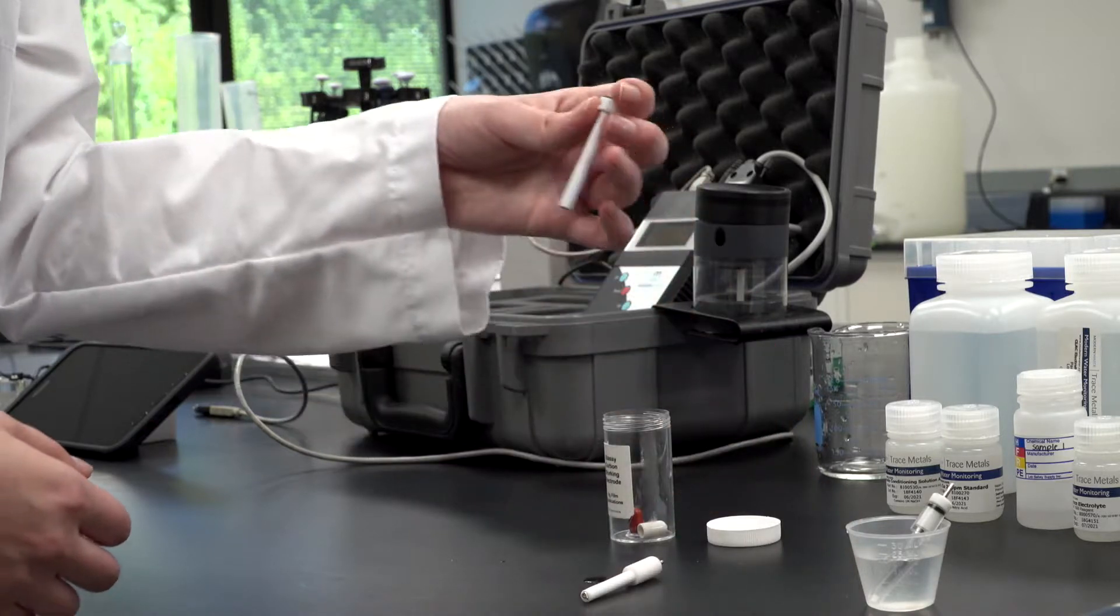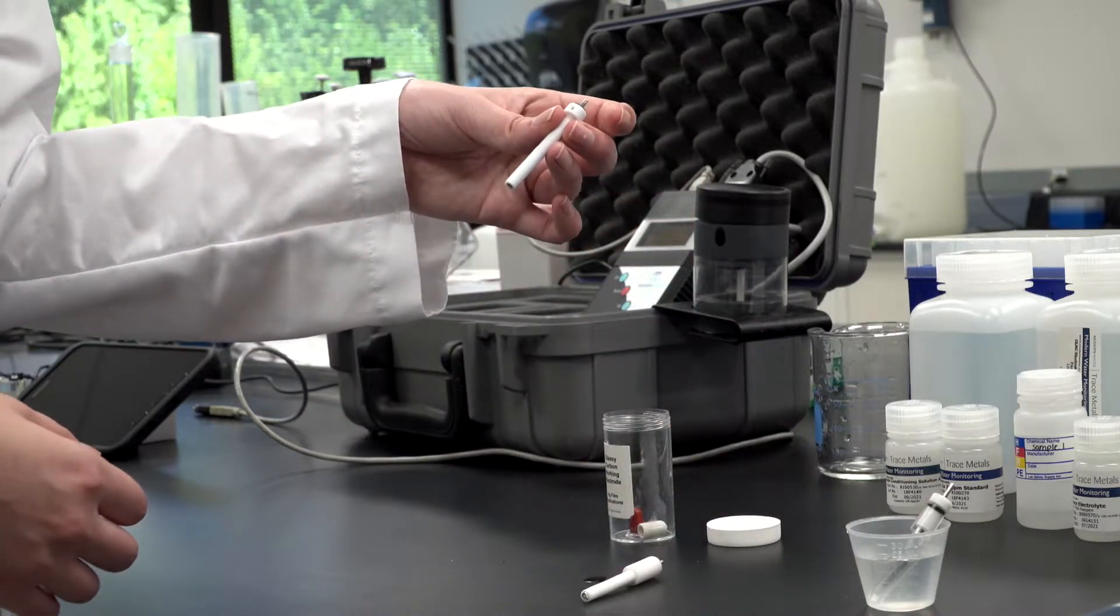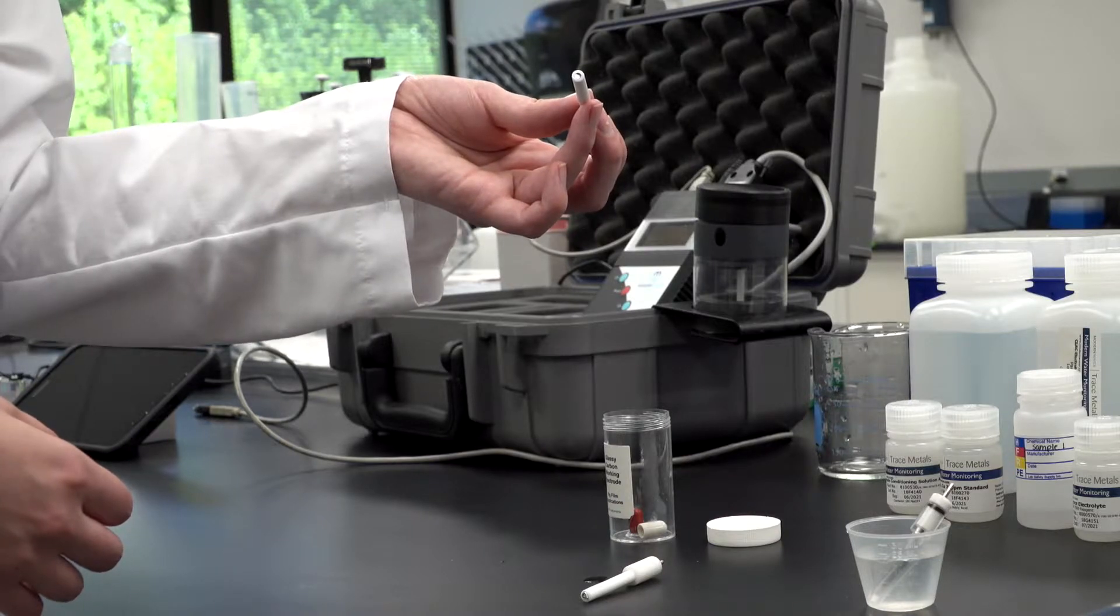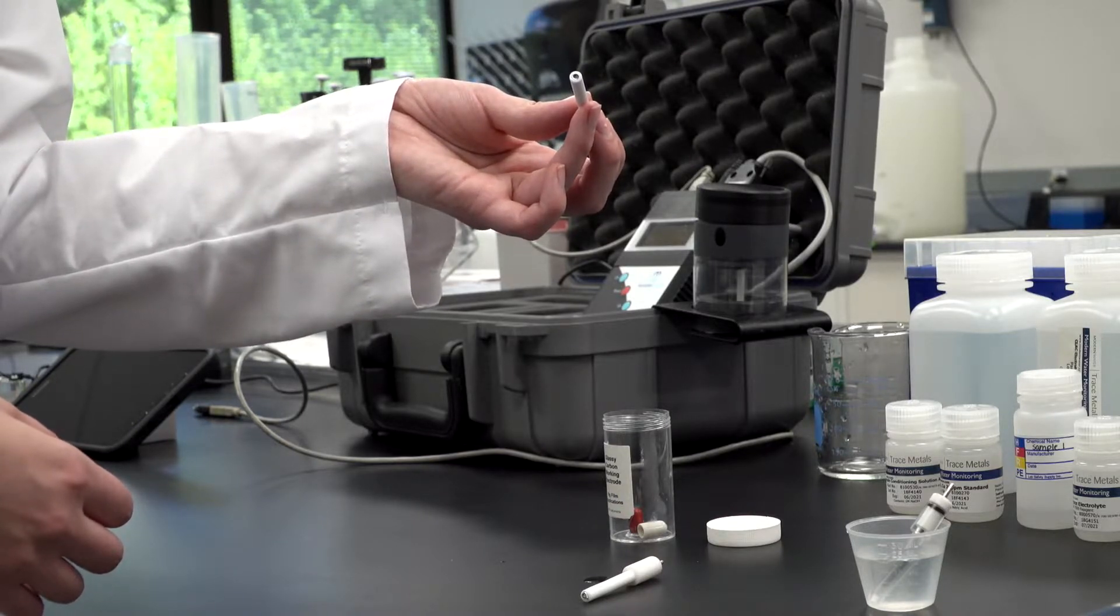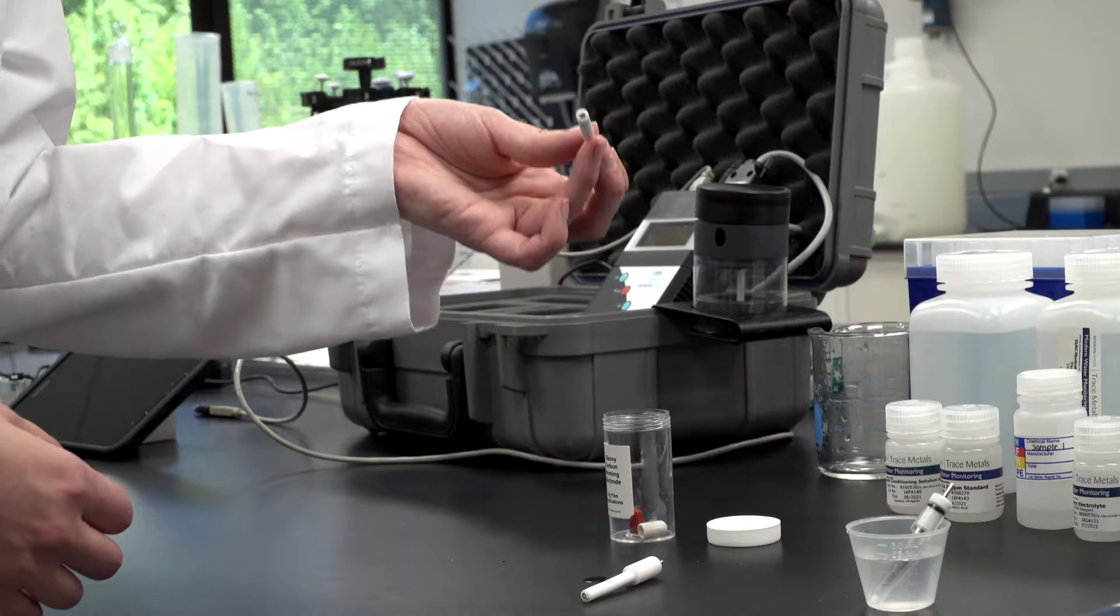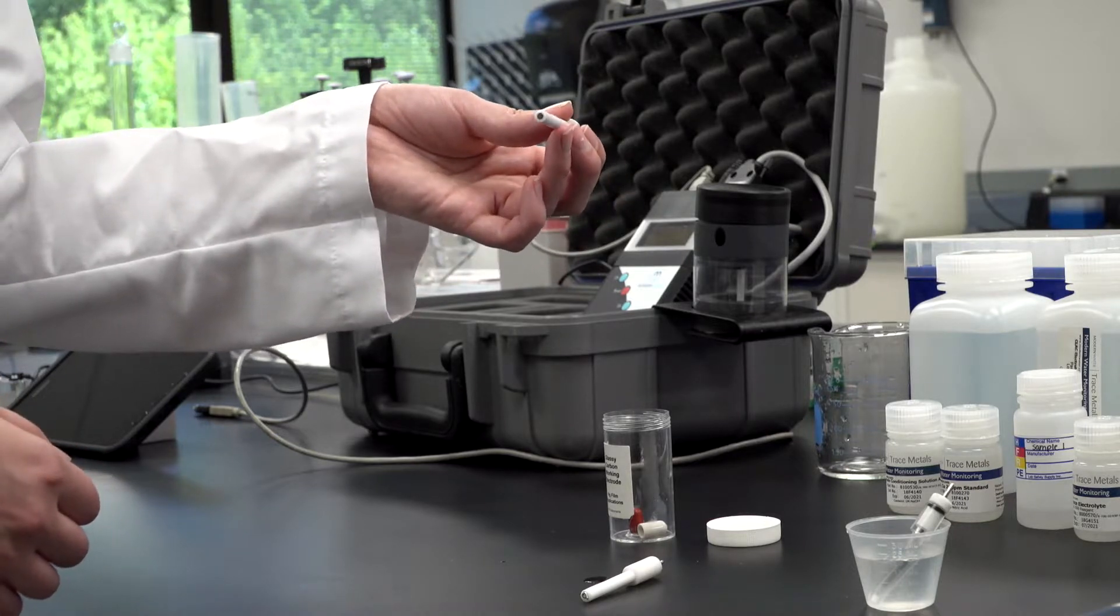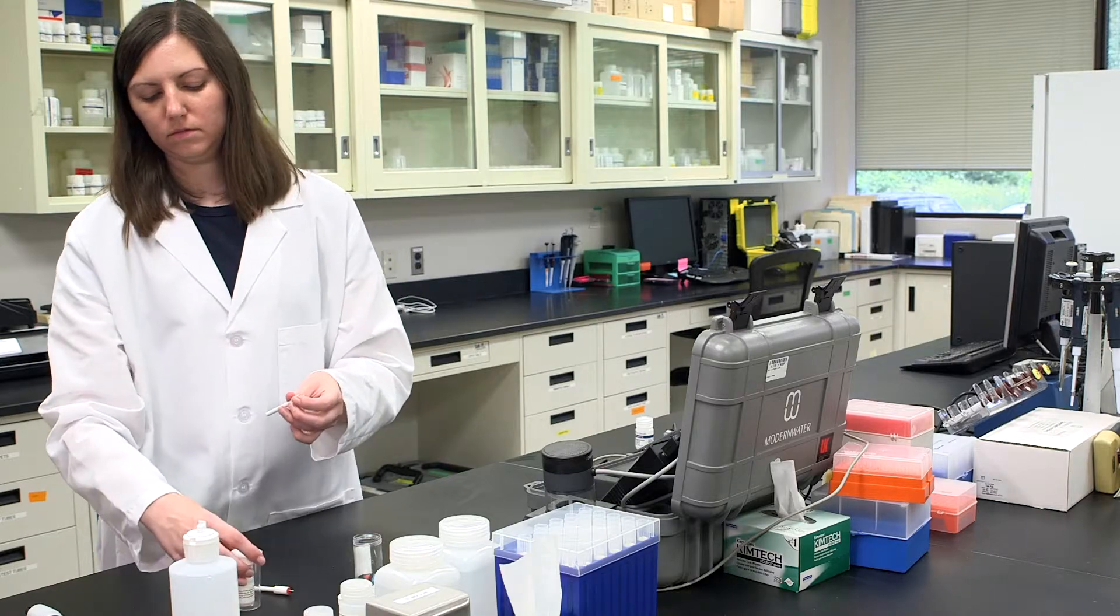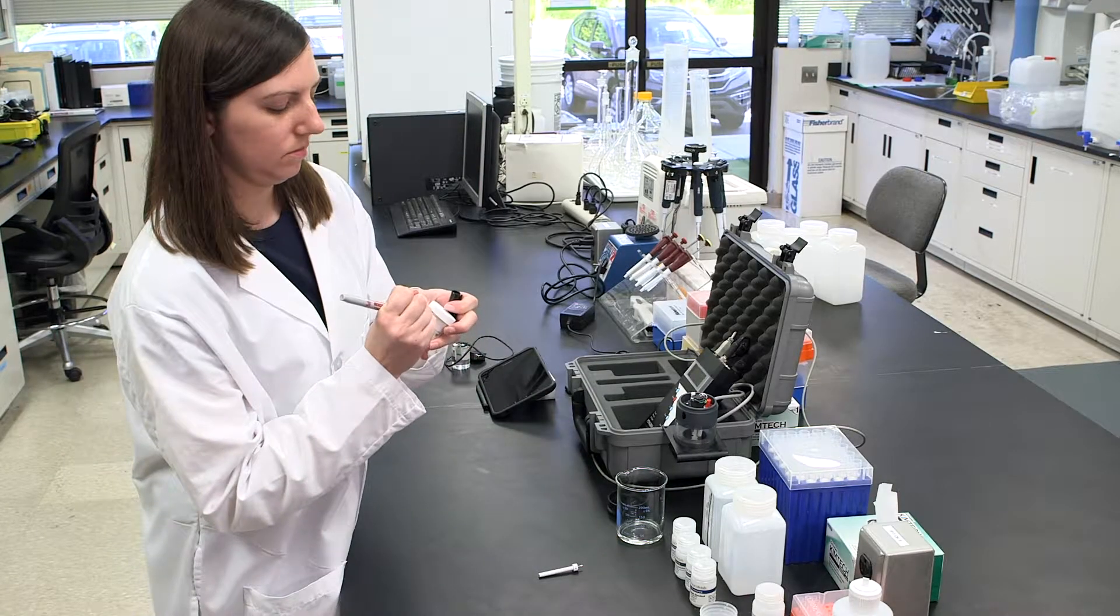The working electrode is where all the key reactions of the analysis take place, and its cleanliness is therefore critical. Do not touch or otherwise contaminate the working electrode surface, or you may need to repeat the following process from the start. To polish a working electrode, use a dedicated polishing kit, part number 190-023.